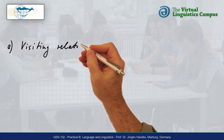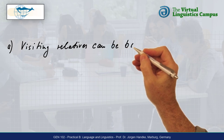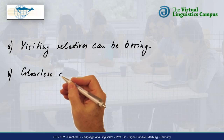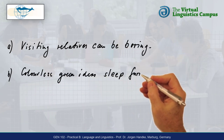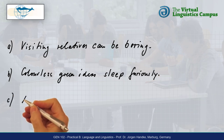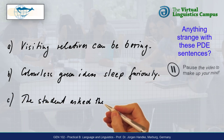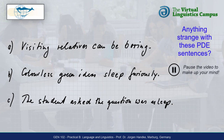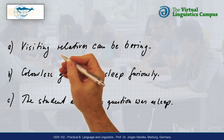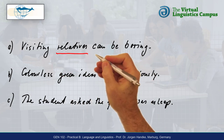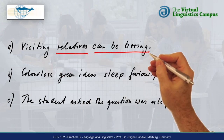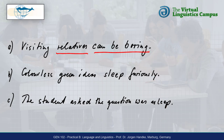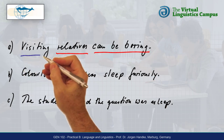Here are three present-day English sentences. Can you describe in what way they are strange without going into linguistic details? The first sentence involves an example of ambiguity — that is, it has two meanings. Either the relatives are boring, or it is boring to visit them.